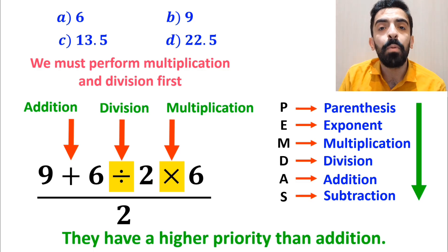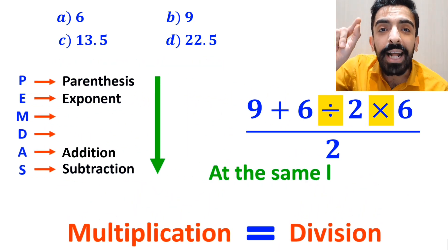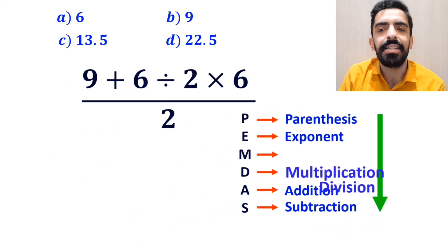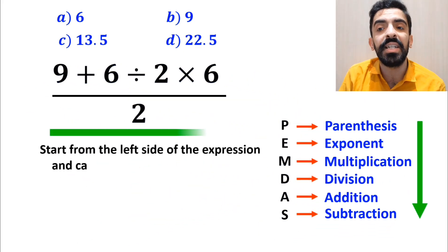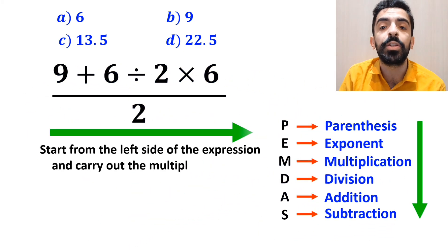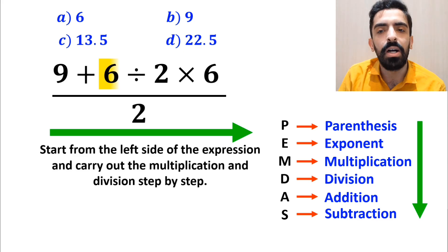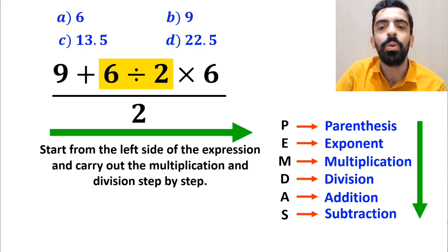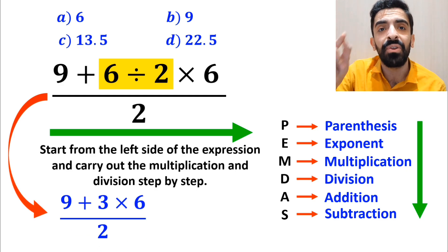However, it's very important to remember that multiplication and division are at the same level of precedence. In this case, the best thing to do is to start from the left side of the expression and carry out the multiplication and division step by step. So first we go for the division between 6 and 2, and we can rewrite the whole expression as 9 plus 3 times 6 over 2.